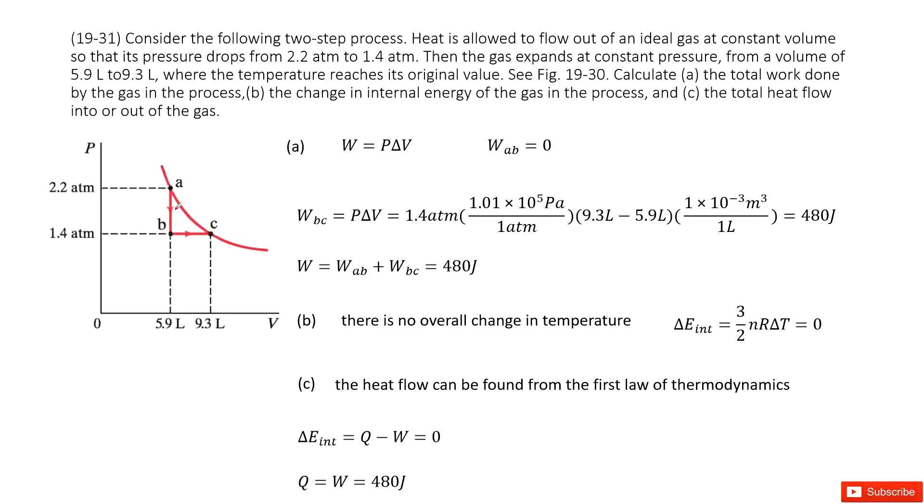Now we look at the work done by AB. As we know, the work done by the ideal gas is P times delta V. And from A to B, the volume is constant, so that makes delta V equal to zero. So W_AB equals zero. From A to B, no work is done.